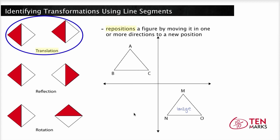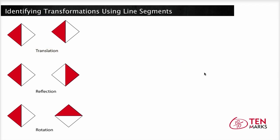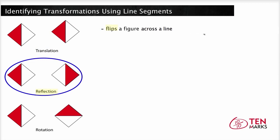Triangle MNO is triangle ABC but it has been moved down and to the right. The image and pre-image have the same shape and size, so they're congruent. Since this is a translation, each pair of sides are congruent: side AB is congruent to side MN, side AC is congruent to side MO, and side BC is congruent to side NO. Now a reflection is a transformation that flips a figure across a line.